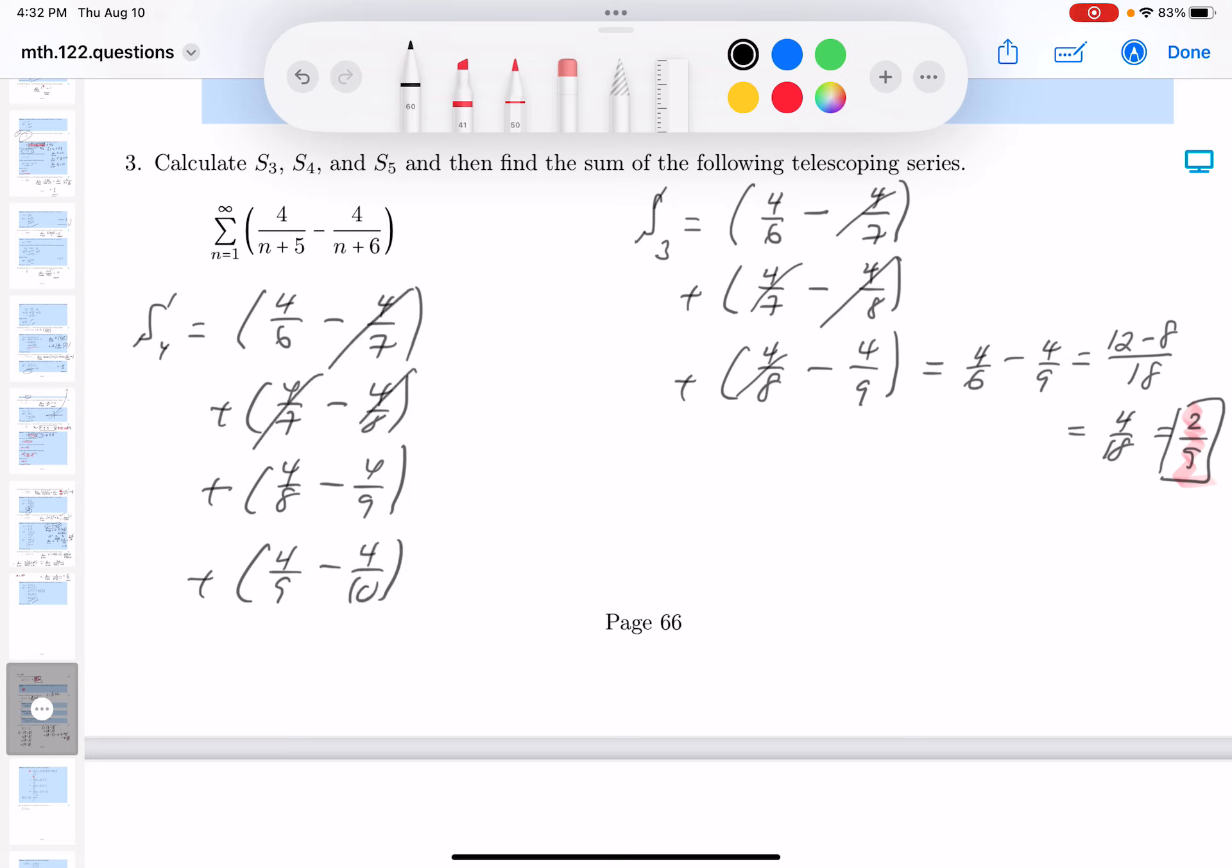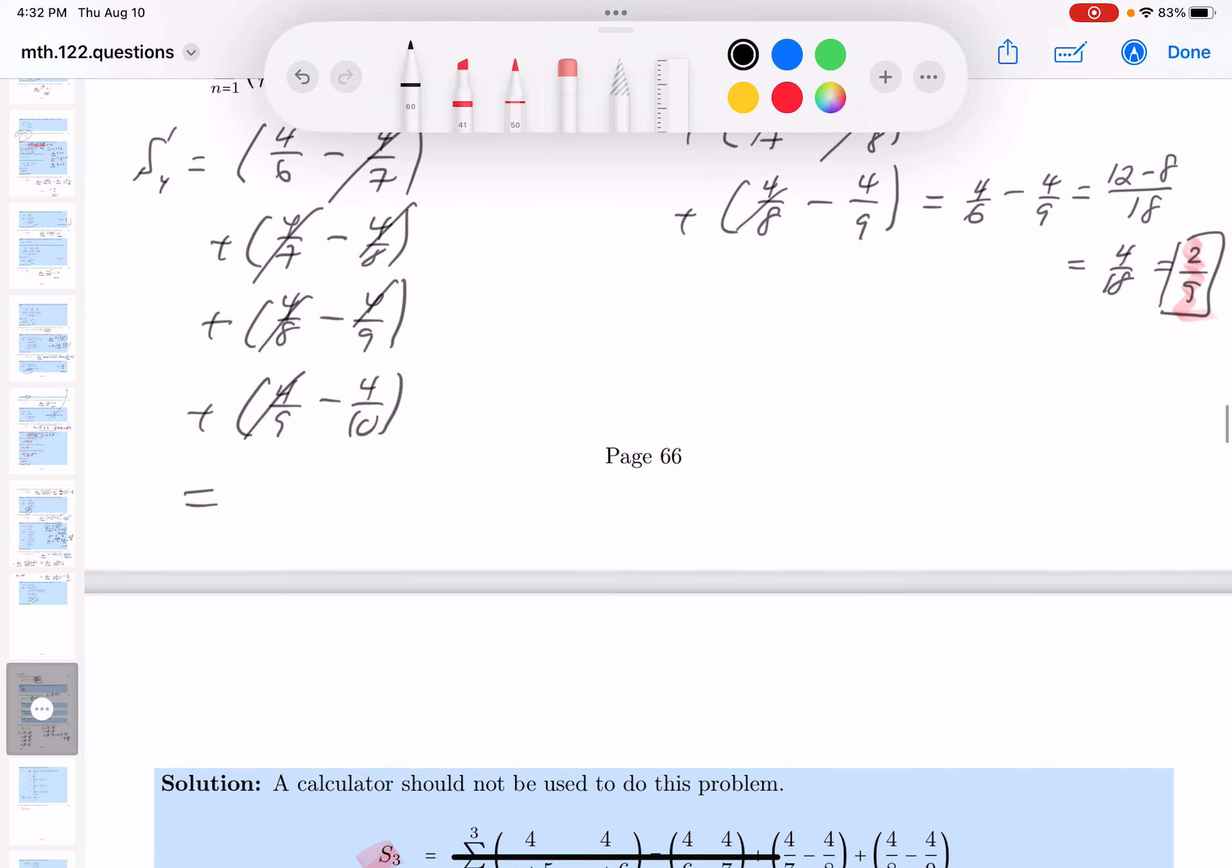Well, again, what am I noticing? This collapsing sum, which makes it easier for me to add it together, because there's only two terms in it. 4 sixths minus 4 tenths.